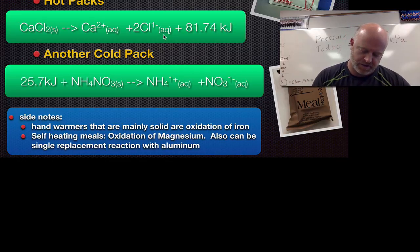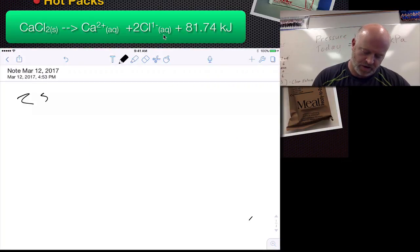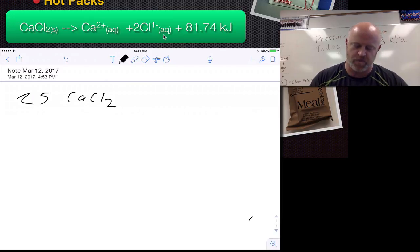Let's say we had 25 grams of calcium chloride and we wanted to dissolve that into water. How would that process work? Basically, what we're going to solve for is how much energy would be produced from that.